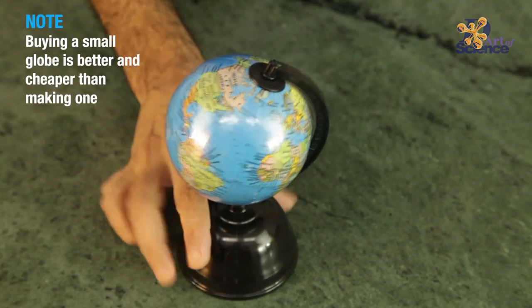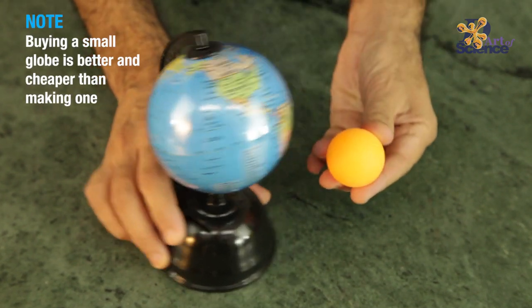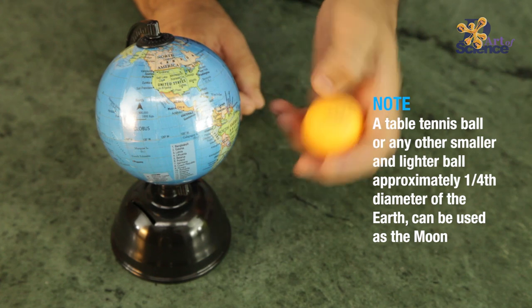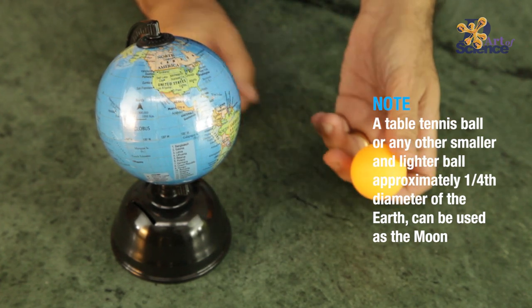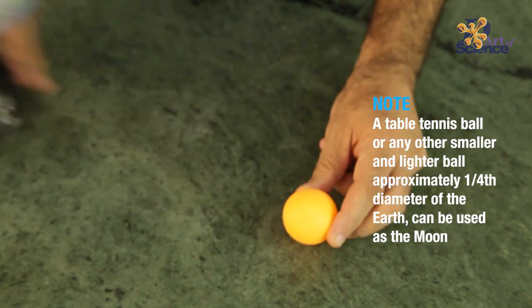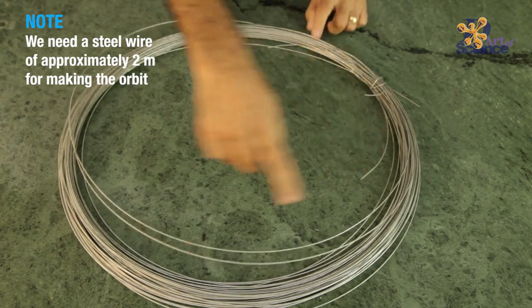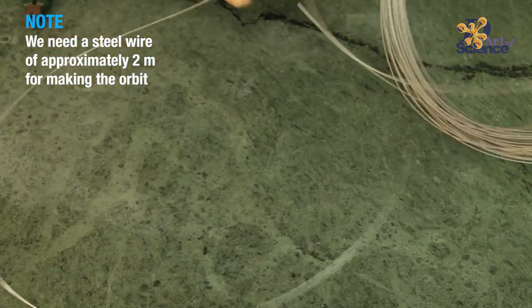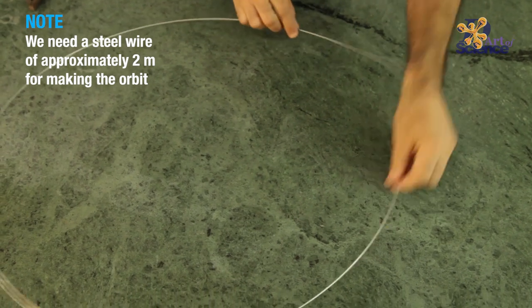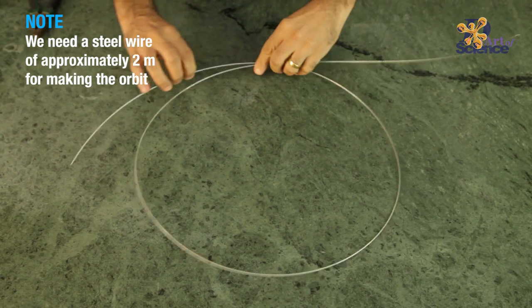This small earth would be better if you buy it, because it will be cheaper than even making it. For the moon, you can use a TT ball or any other similar sized light ball that is 1 fourth the size of the earth that you get. For the orbit, you will need a steel wire that you can buy in a hardware store. You just need to buy 2 rounds of it, not the full roll, just about 2 meters.